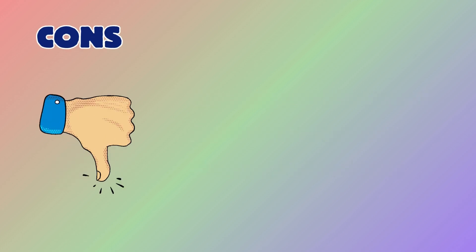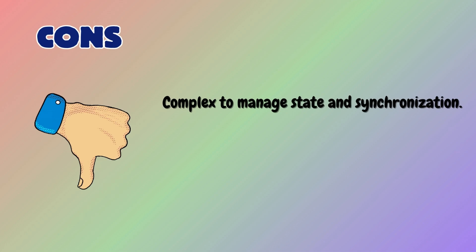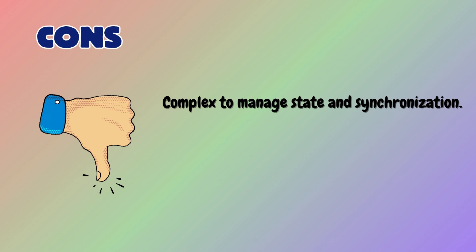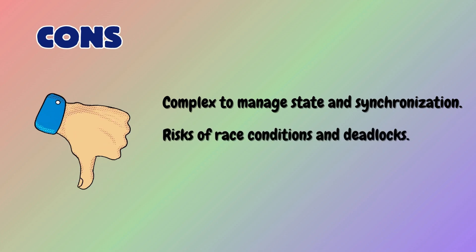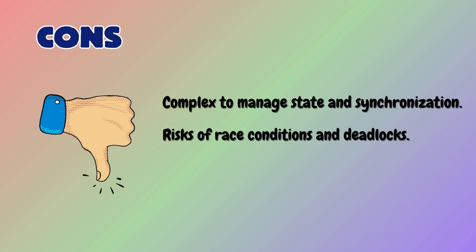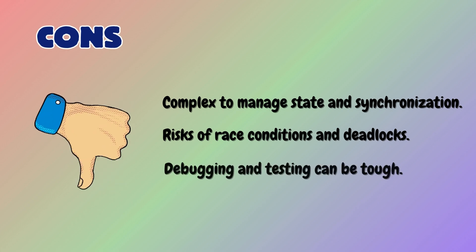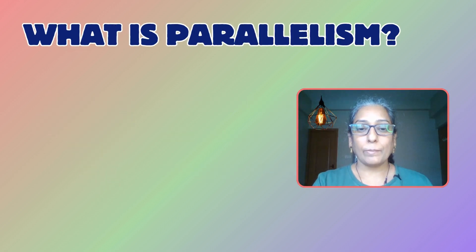Concurrency can be tricky because managing state and synchronization between tasks is complex. There are also risks of race conditions and deadlocks, which can lead to inconsistencies. Debugging and testing can be challenging with concurrency.